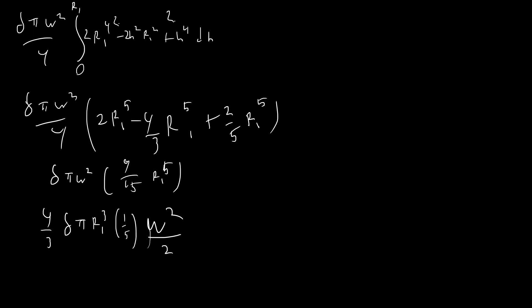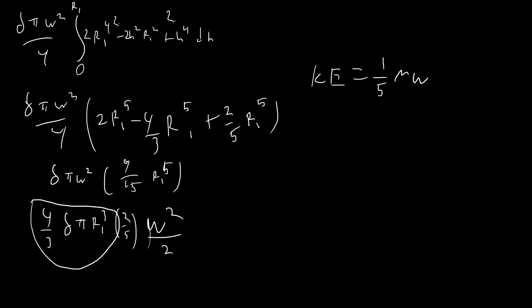We can factor out four thirds * delta * pi * r1³, which is the volume of the sphere times delta — that's just the mass m. What's left is one fifth * omega² * r1² times one half, giving kinetic energy equals one half * omega² * (2/5 * m * r1²). So the moment of inertia of a solid sphere equals two fifths * m * r1².